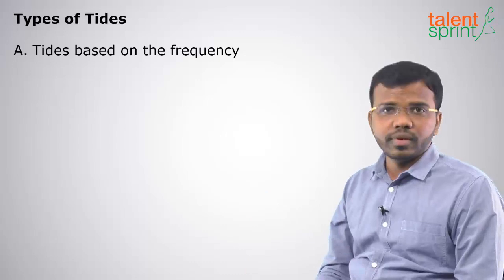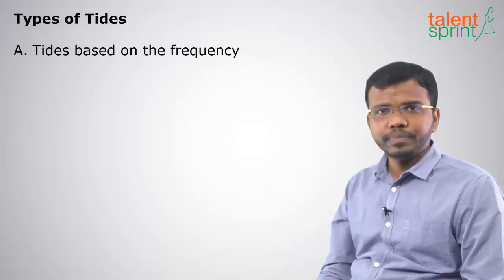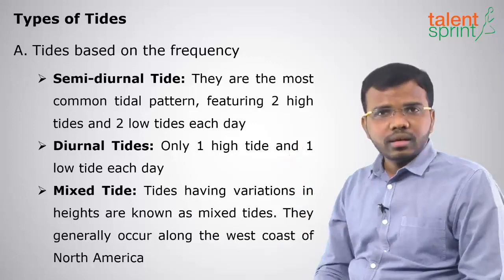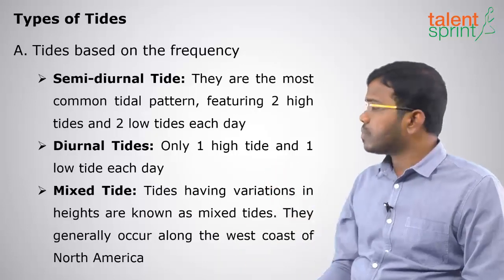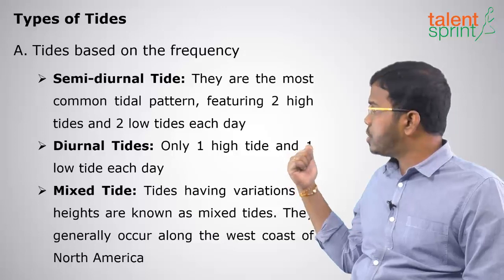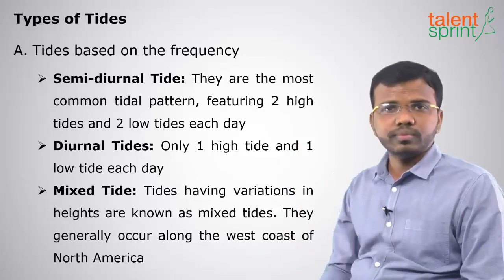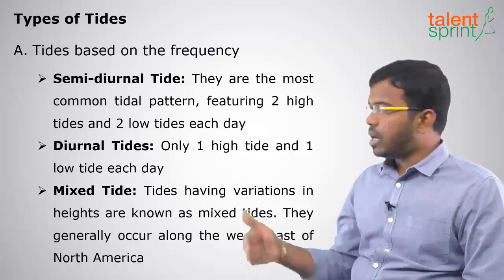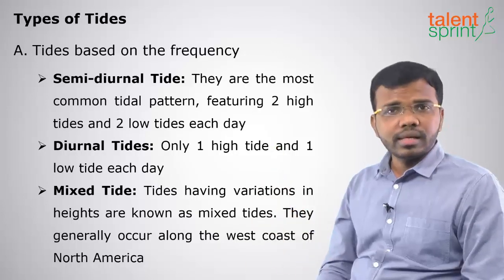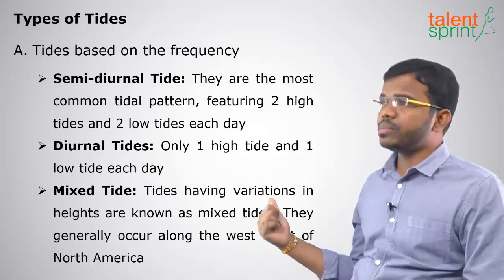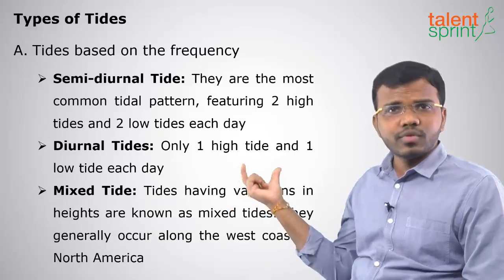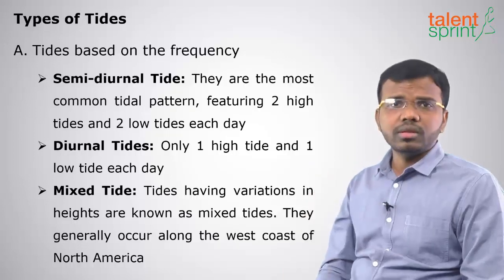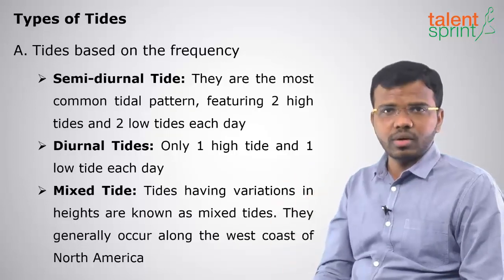The classification of tides: first, based on frequency. Under this we have three divisions. The first is semi-diurnal tide, which means there will be two high tides and two low tides in a day. The next is diurnal tides, where we have one high tide and one low tide in a day. And next is mixed tide, where there will be different heights of tides. These are the three types of classifications based on frequency.